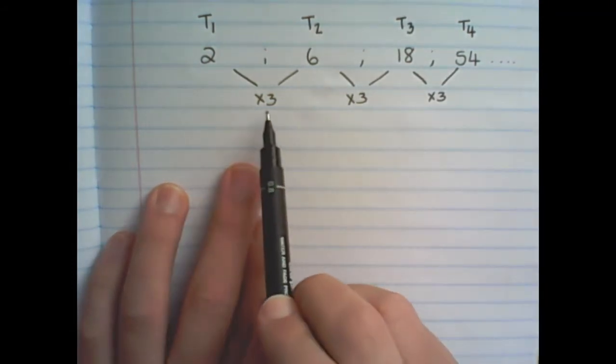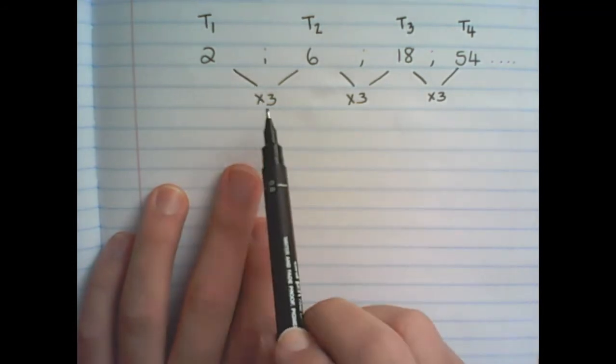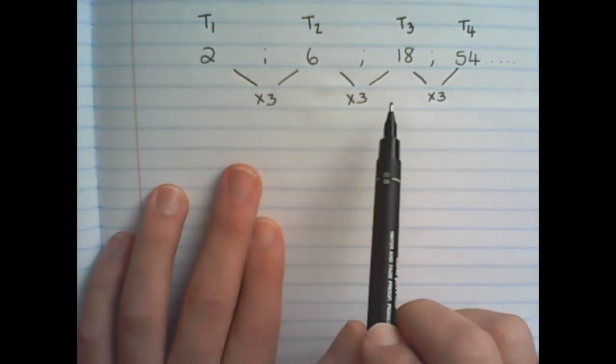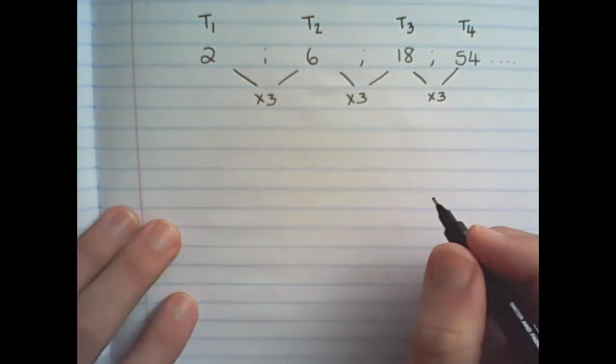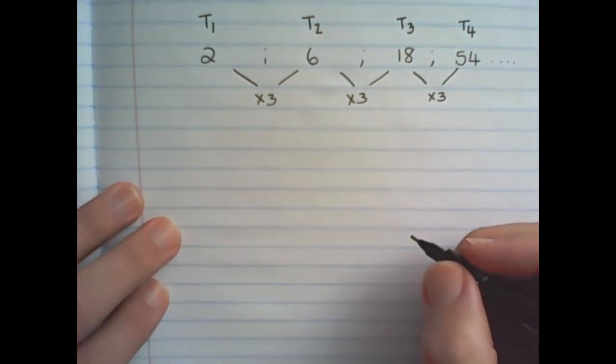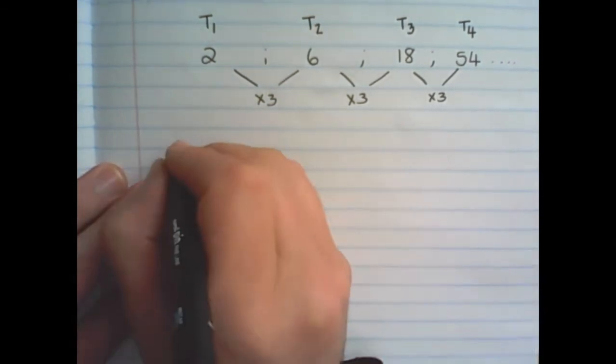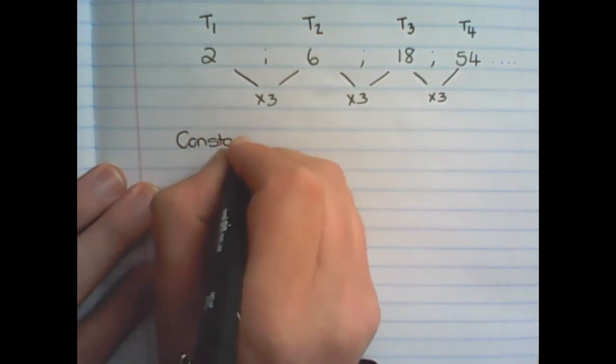Now I am not adding or subtracting by constant value, but I am rather multiplying by constant value. And this is the main characteristic of a geometric number pattern. It has a constant ratio between the terms.